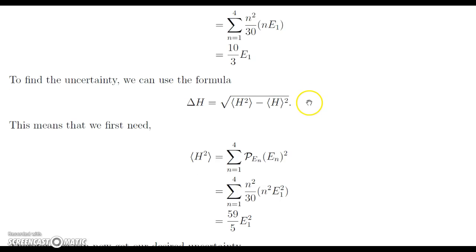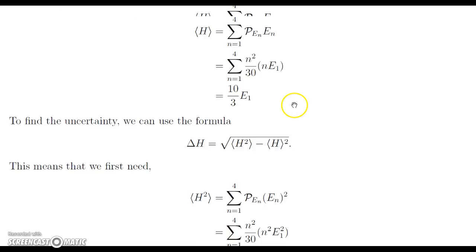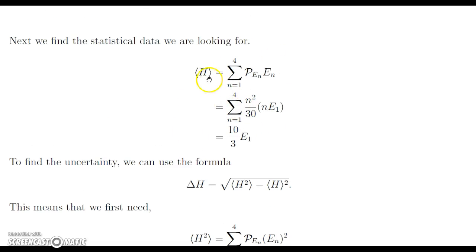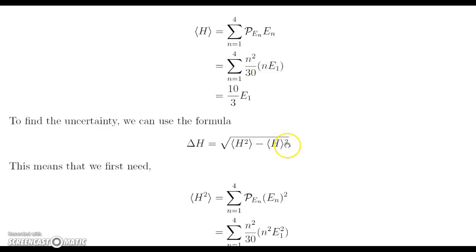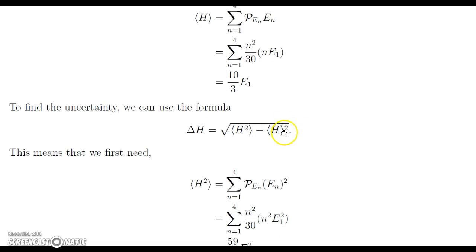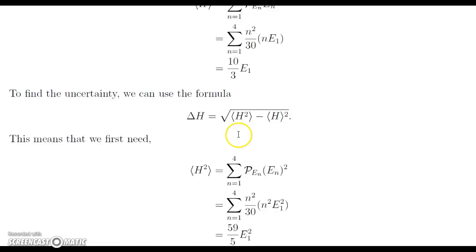Now similarly, we want to find the uncertainty and analyze that. And to do that, we can use the formula here that the uncertainty of the Hamiltonian, so the uncertainty for the energy values, is equal to the expectation value of the Hamiltonian squared, which here we're just going to be taking the energy squared, and we're going to subtract the expectation value squared. And this is all under a square root. And now we have this, and we already have the expectation value of the Hamiltonian here. We can get this value quickly by just squaring this value, but here we would need to find this value first.